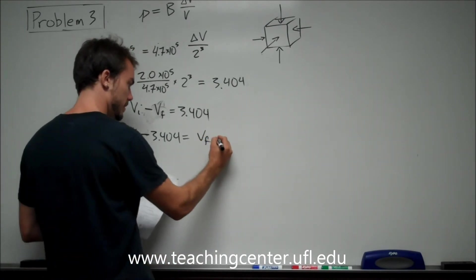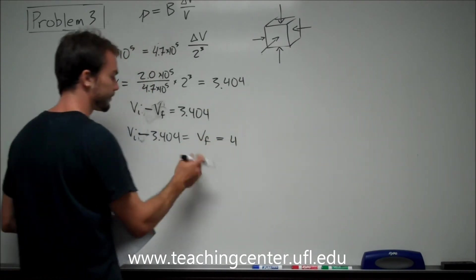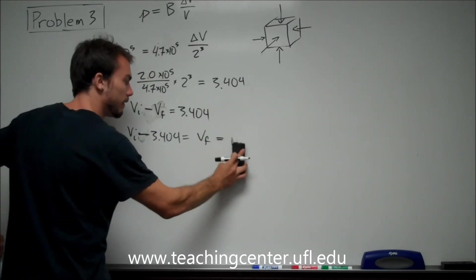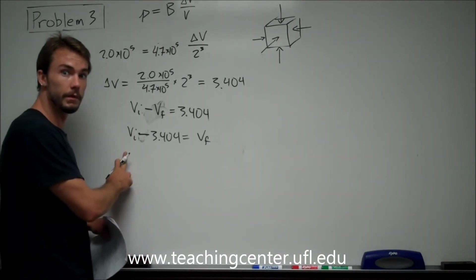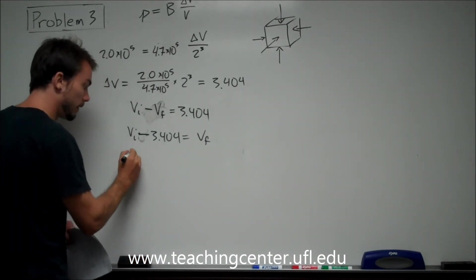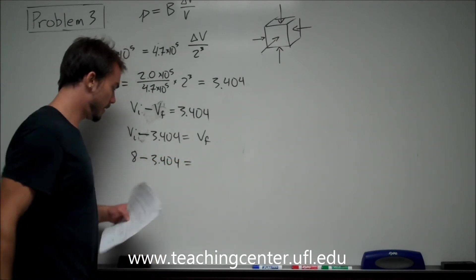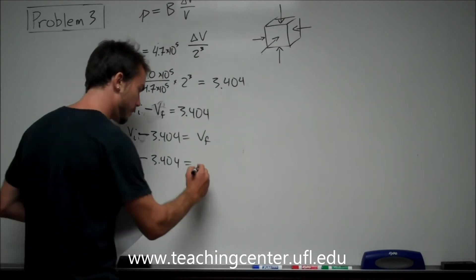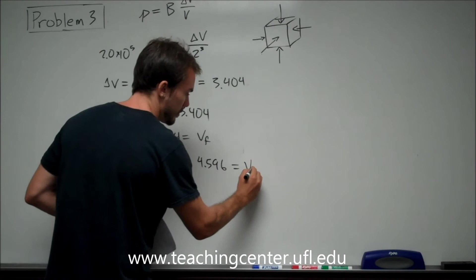Let me rewrite this and plug in the initial volume. The initial volume was 2 cubed, or 8 centimeters cubed. So 8 minus 3.404 is going to be equal to 4.596. And that is going to be our final volume.